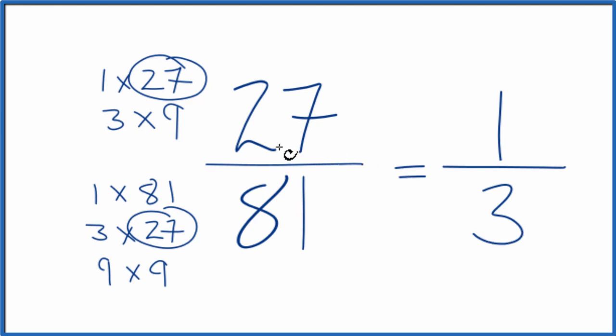These are equivalent. If you divide 27 by 81 or one by three, you get the same decimal answer. It's just that we've simplified 27 over 81 down to one over three. This is Dr. B and thanks for watching.